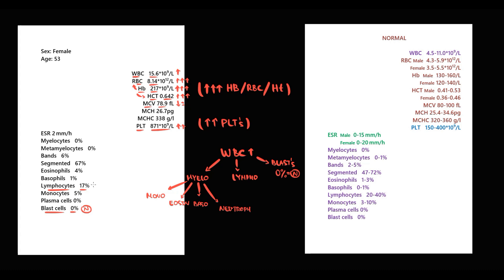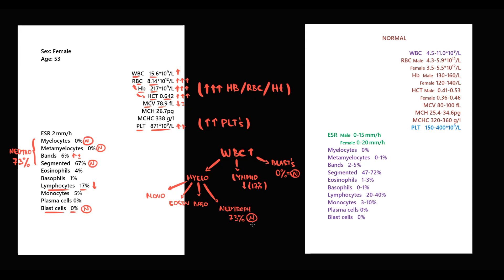Lymphocytes in this case consist of 17 percent of all white blood cells, which is a little bit lower than normal, so myelocytes are left. Looking at neutrophils, the percentage of segmented neutrophils is normal, bands are a little bit elevated, and there are no metamyelocytes or myelocytes, which is normal. The total amount of neutrophils is 73 percent of all white blood cells. Eosinophils, basophils, and monocytes are all within normal range.